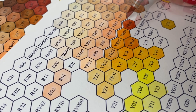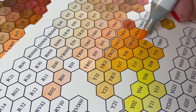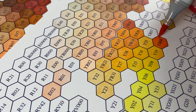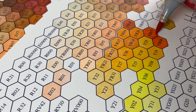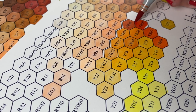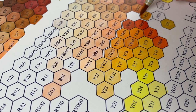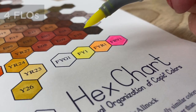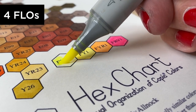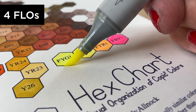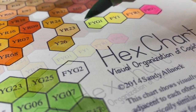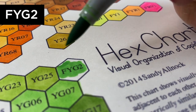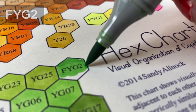Lots of people use this chart in different ways — some pick colors by skipping over a few from the color they're using to find a shadow or highlight color. If you have ideas on how you use it, please explain those in the comments so other people can learn from you. It would also help if you left a review on the website, because people considering buying the chart might like to know how helpful it is.